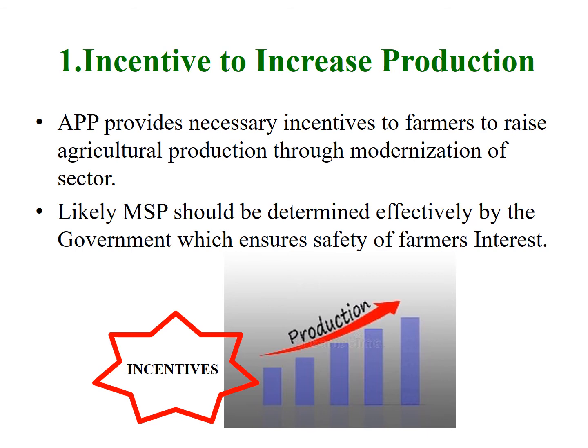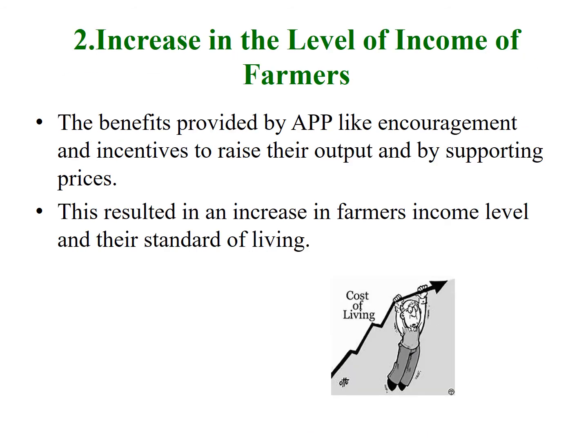The first important effect of agricultural price policy is incentive to increase production. Agricultural price policy has been providing necessary incentive to farmers for raising their agricultural output through modernization of the sector. The minimum support price should be determined effectively by the government, which will safeguard the interest of farmers. Another important effect is that it increases the level of income of farmers. The agricultural price policy provides necessary benefits to farmers by encouraging them and supporting their output prices, resulting in an increase in income level and living standards.